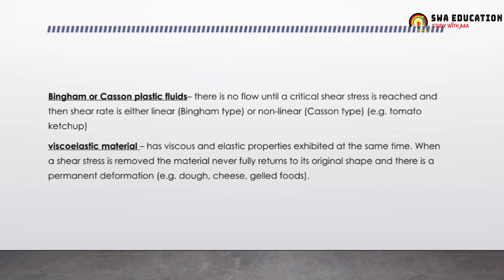The next type is Bingham or Casson plastic fluid. Here there is no flow until a critical shear stress is reached. Examples include tomato ketchup and sauce. The shear rate can be either linear or non-linear. Be very careful about the examples and which type they fall into, as that would be the exact kind of question asked in the exam.